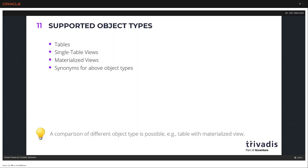It is also possible to use different object types in a comparison — for example, a table with a materialized view. But if the materialized view is not up to date, you will find a lot of different rows. So you should think about whether it's really intelligent to compare different object types. If the materialized view is in sync, it's fine; but if it's stale, it's not the best approach.